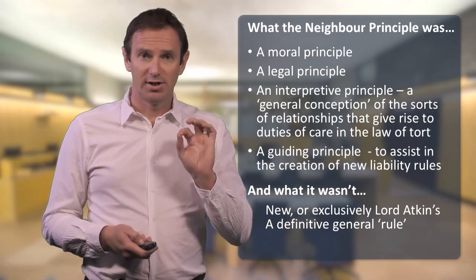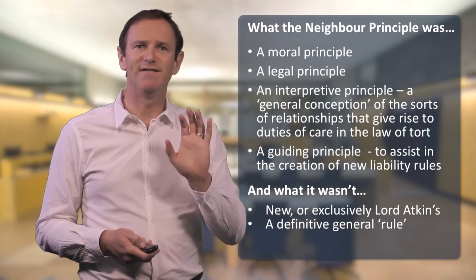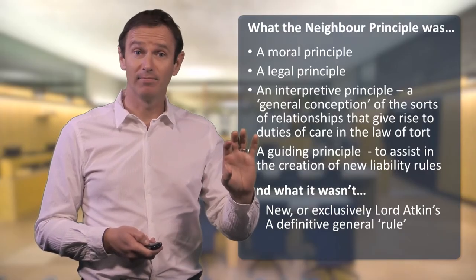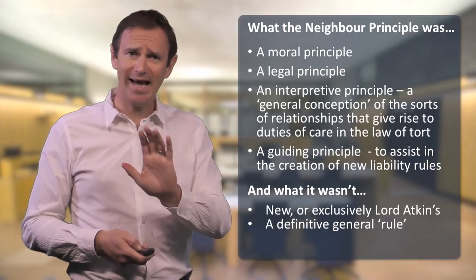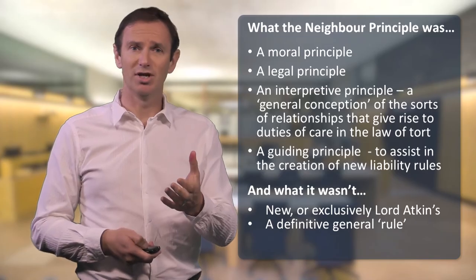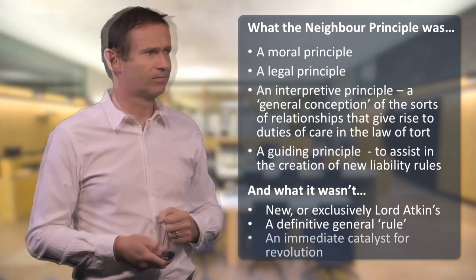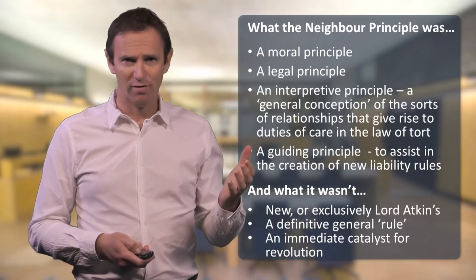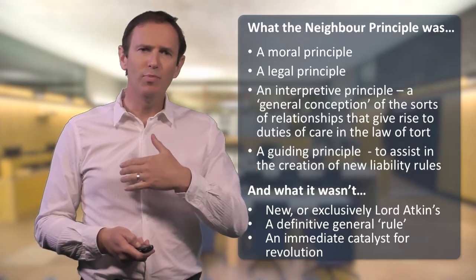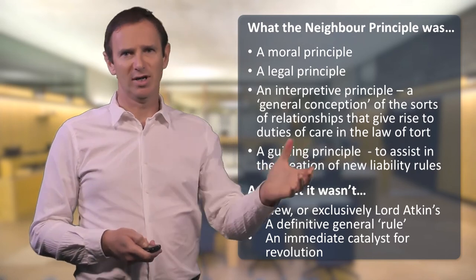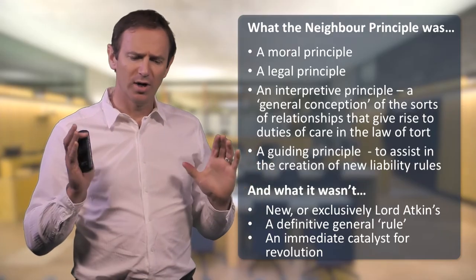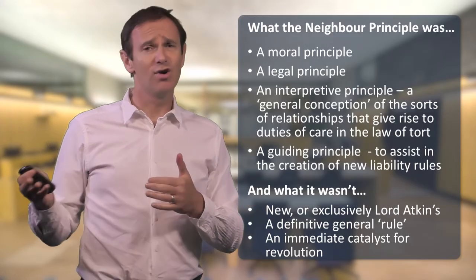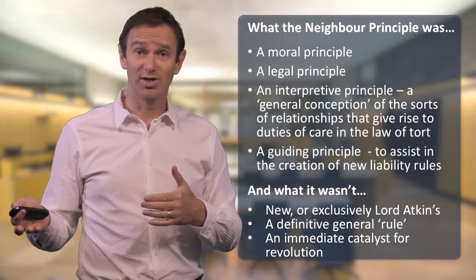Another point Lord Atkin distinctly makes in his judgment is that the neighbour principle was not designed to be a definitive rule. We have to distinguish between rules which, when applied, apply automatically, and principles which, when applied, do not necessarily dictate any given result, but which merely assist judges in determining the outcome of a case one way or the other. It's sometimes thought that Lord Atkin's neighbour principle sparked a bomb in the law of negligence, in the sense of opening up the floodgates to a new sphere of liability, urging the law forward so that anyone who could foresee harm to anybody else would automatically owe that person a legal duty of care.